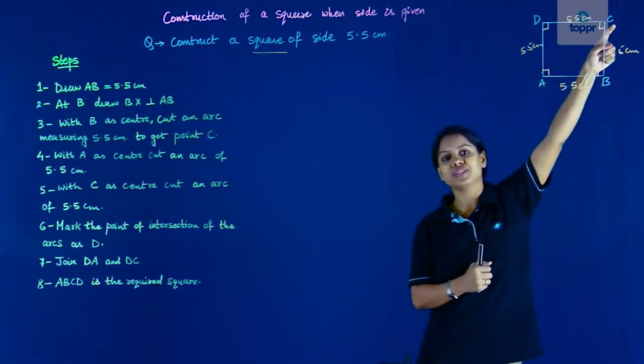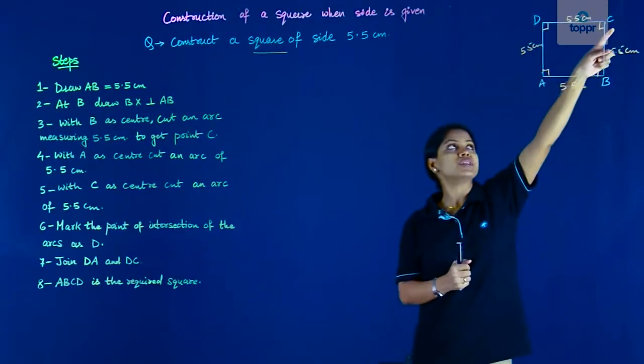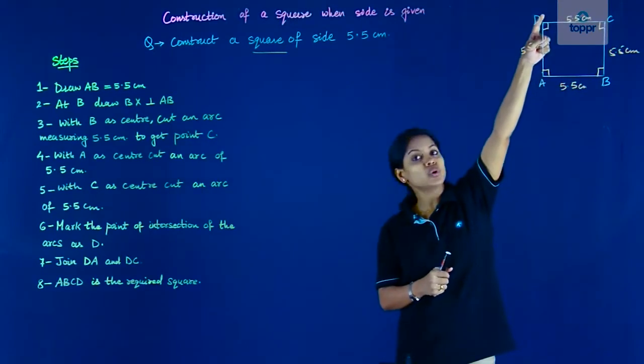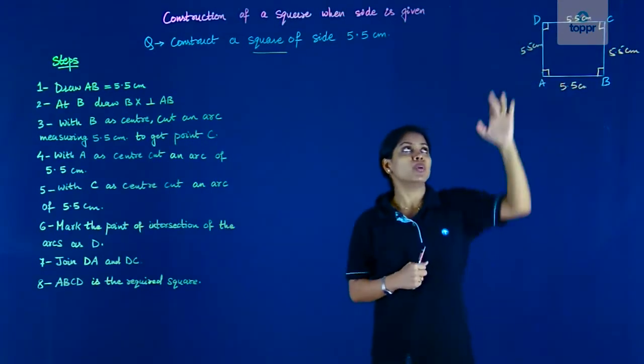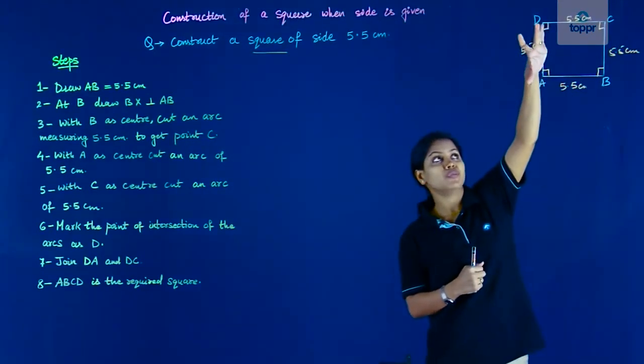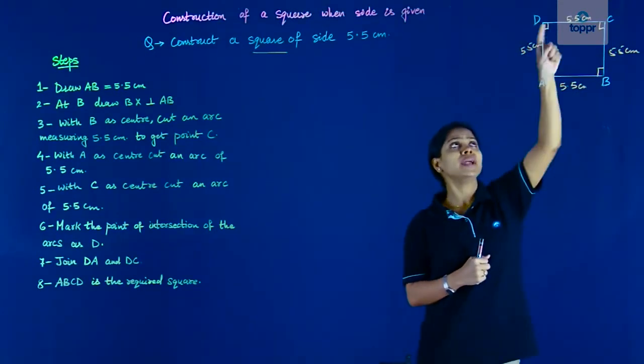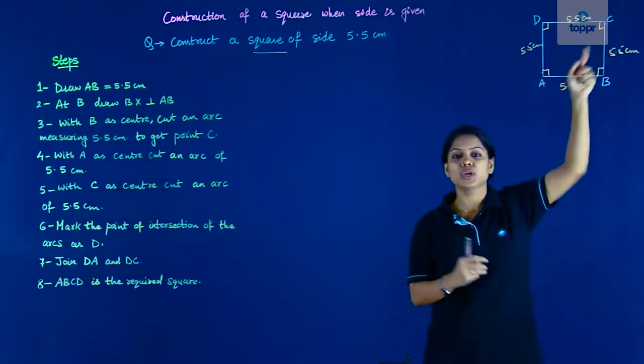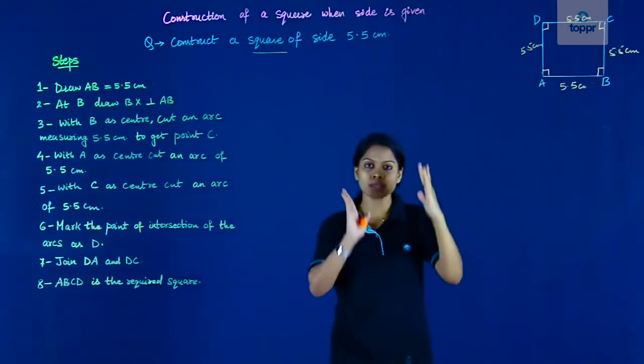So that we have C. Now we have A, B, and C. Now it's very easy to locate D. Why? Because D is at a distance of 5.5 from A and at a distance of 5.5 from C. So basically two arcs, one from A, one from C, measuring 5.5 centimeters.